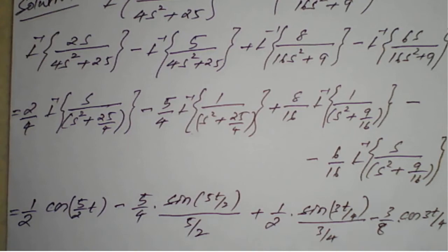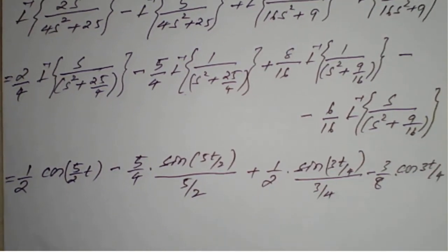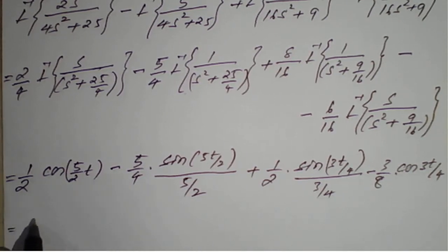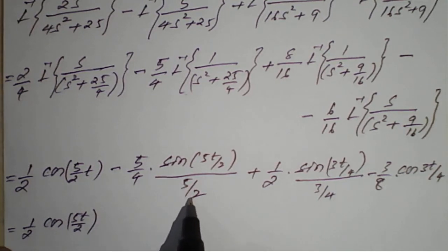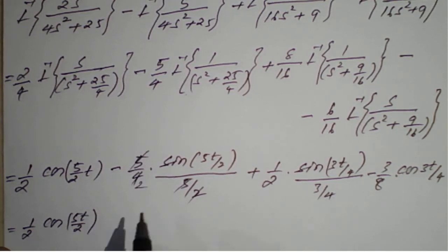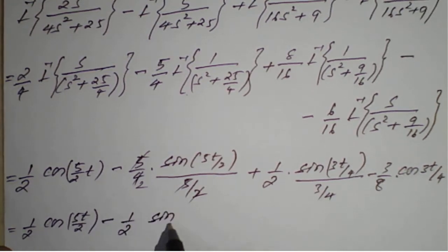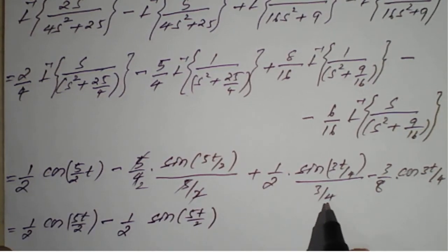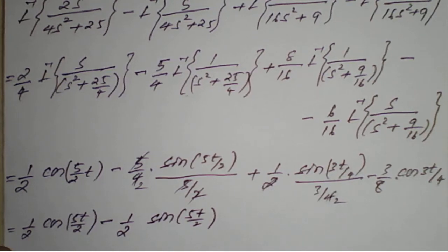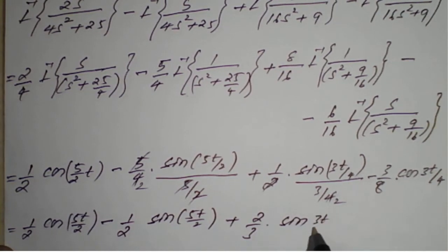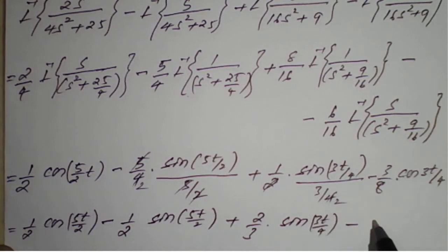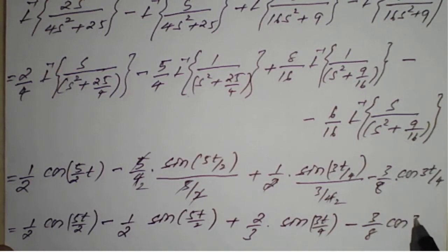After final simplification and rearrangement, the result is: (1/2)cos(5t/2) minus (1/2)sin(5t/2) — where the 5/2 factors cancel appropriately — plus (2/3)sin(3t/4) plus (3/8)cos(3t/4). This completes the solution to the first problem.